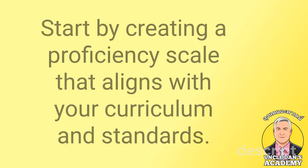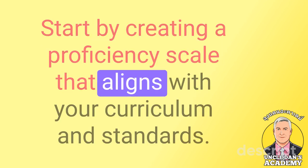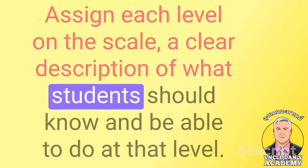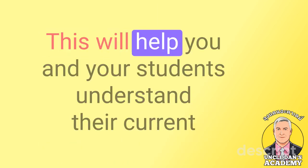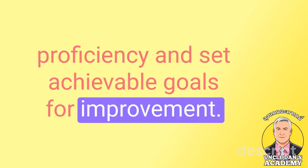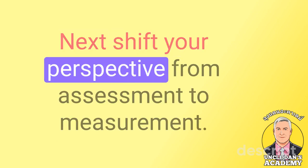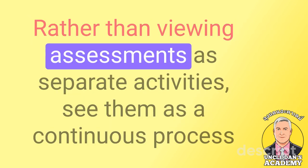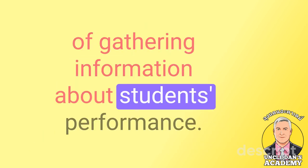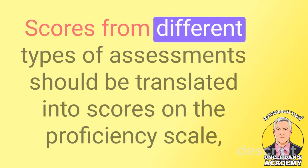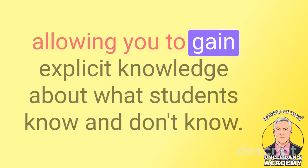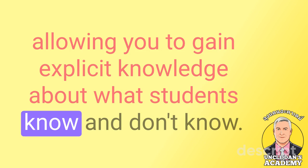To implement this technique, start by creating a proficiency scale that aligns with your curriculum and standards. Assign each level on the scale a clear description of what students should know and be able to do at that level. This will help you and your students understand their current proficiency and set achievable goals for improvement. Next, shift your perspective from assessment to measurement — rather than viewing assessments as separate activities, see them as a continuous process of gathering information about students' performance. Scores from different types of assessments should be translated into scores on the proficiency scale, allowing you to gain explicit knowledge about what students know and don't know.